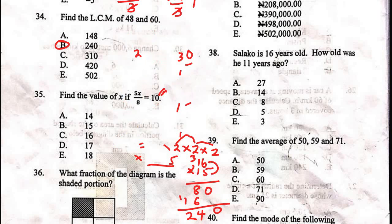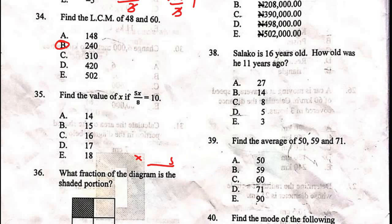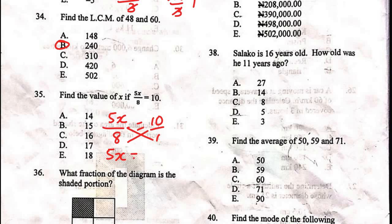Question 35: find the value of x. 5x over 8 equals 10. All whole numbers have a denominator of 1, so cross-multiply: 5x times 1 equals 8 times 10, giving 5x equals 80. Divide both sides by 5: x equals 80 divided by 5, which is 16. The correct option is C.